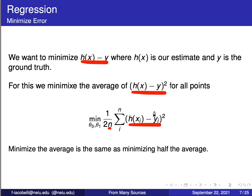We want to minimize this average. Minimizing the average is basically the same as minimizing one-half of the average — they're the same optimization problem. We put this factor of one-half in because it's going to help with the math later, and we still have to minimize the same function — we want this function to reach its minimum.